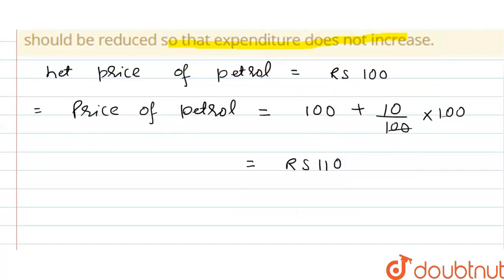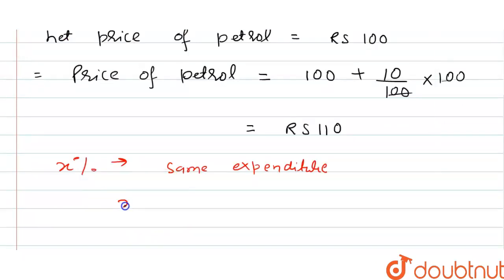Now, to keep the same expenditure, the consumption should be reduced by x percent. Then x equals 110 minus 100, because 110 is the new price of petrol. We make the formula: x equals (110 - 100) divided by 110, multiplied by 100.